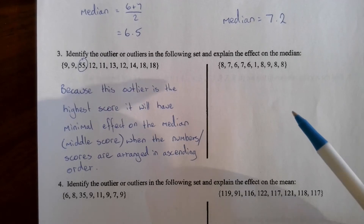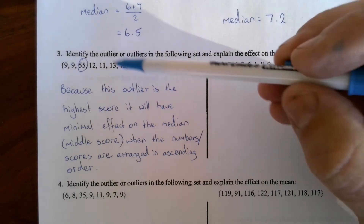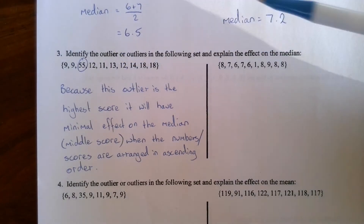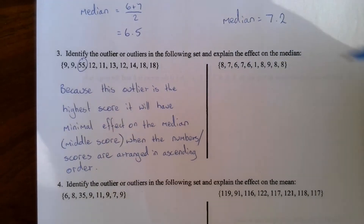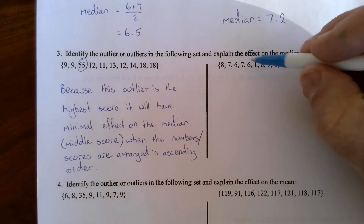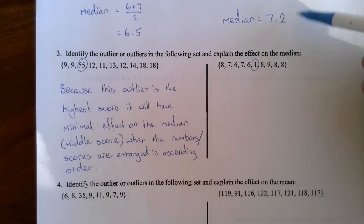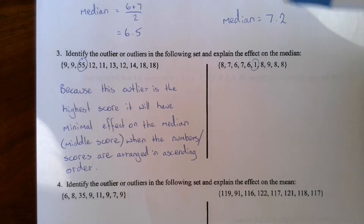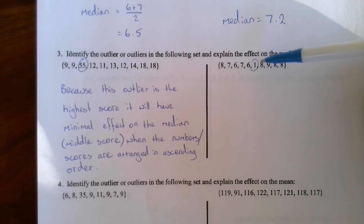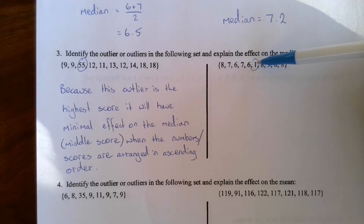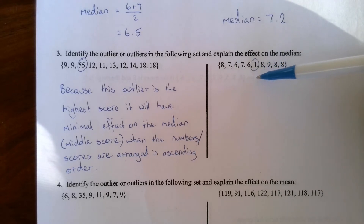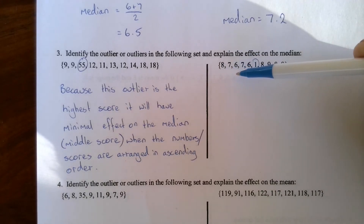Question 3b again asks us to identify an outlier and explain its effect on the median. Scanning through the data, 1 is the obvious outlier — it doesn't fit this data set as well as 55 didn't fit the last one. Since 1 is the lowest score, it will have a minimal impact on the median once the values are arranged from smallest to largest.